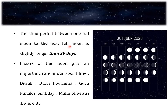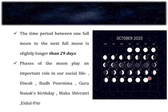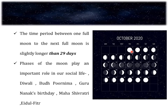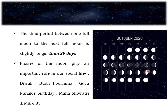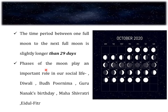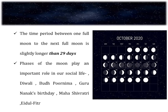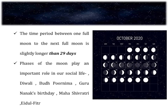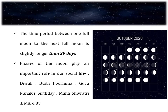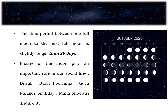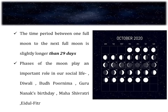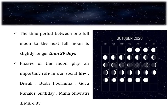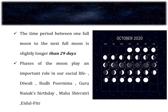The time period between one full moon to the next full moon is slightly longer than 29 days. The phases of the moon play a very important role in our social life, because almost all festivals in India are celebrated according to the phases of the moon. For example, Diwali is celebrated on the new moon day; Buddha Purnima and Guru Nanak's birthday are celebrated on the full moon day; Maha Shivaratri is celebrated on the 14th of the waning moon; and Eid ul-Fitr is observed on the following day of the crescent moon.